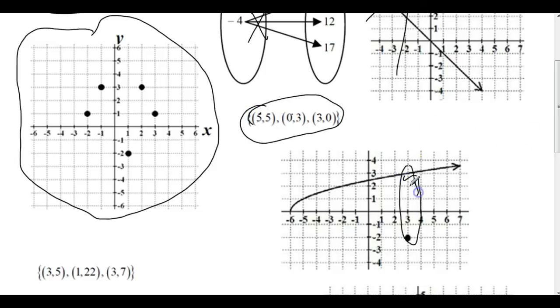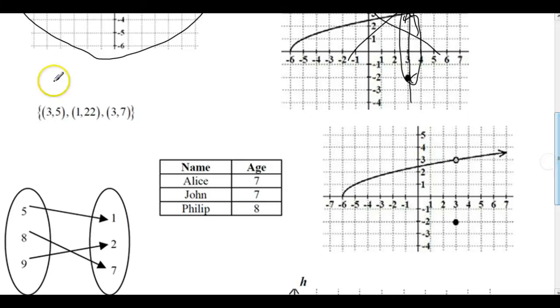This here, tricky, right? I can draw a vertical line that goes through, so that is not a function. (3, 1), (3, not a function. Alice, John, Philip, function.